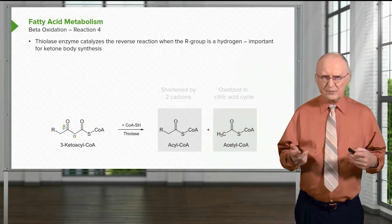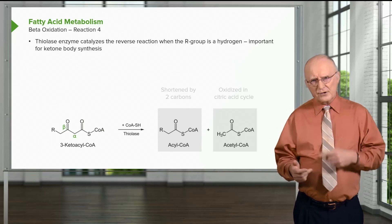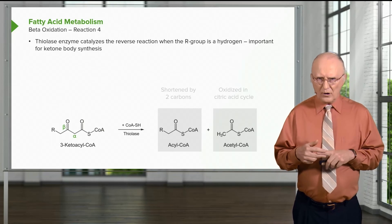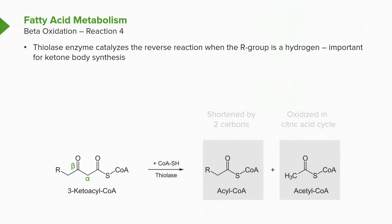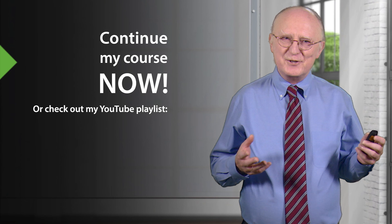The thiolase enzyme that catalyzes this breakdown reaction is interesting because the reverse reaction creates an important intermediate when the acyl-CoA only has two carbons. If we have an acyl-CoA with just two carbons, that is also acetyl-CoA. What thiolase does is join together two molecules of acetyl-CoA at the beginning of the process of forming important energy molecules known as ketone bodies.